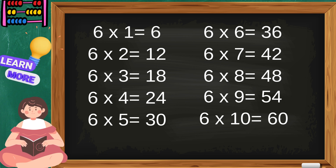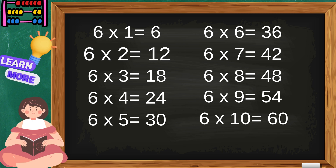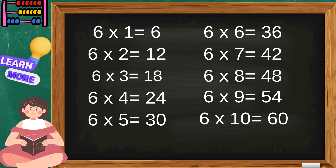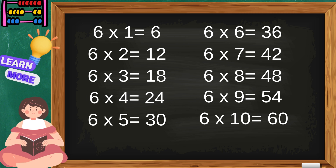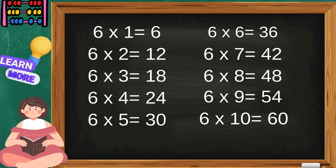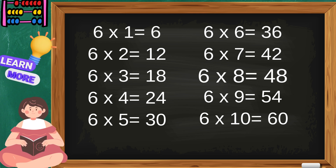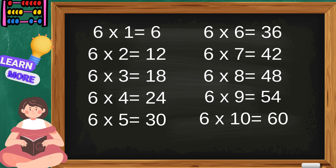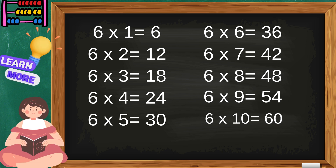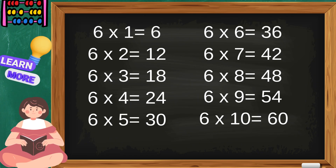Sing with me children. Six ones are six, six twos are twelve, six threes are eighteen, six fours are twenty-four, six fives are thirty, six sixes are thirty-six, six sevens are forty-two, six eights are forty-eight, six nines are fifty-four, six tens are sixty. The table of six. Now you know it.